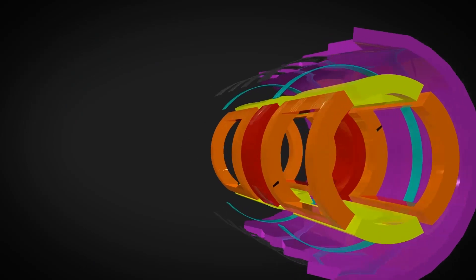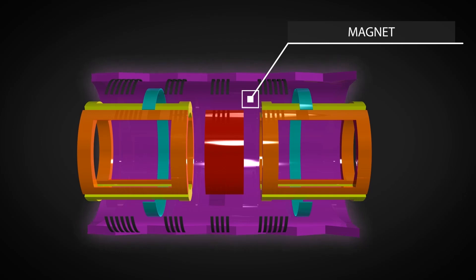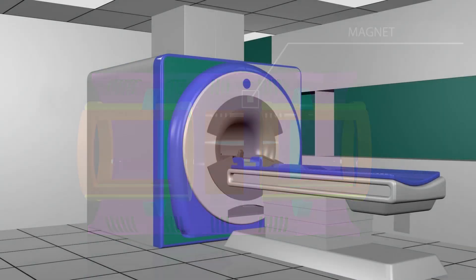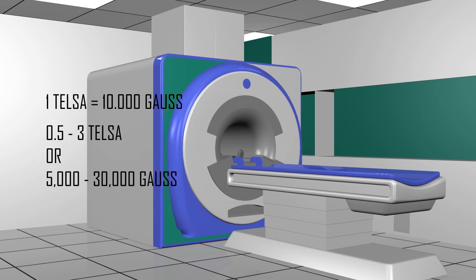The magnet is the most important part and the biggest component of the whole scanner. The magnet is rated using a unit known as Tesla or Gauss. One Tesla equals 10,000 Gauss. The range of the magnetic field of an MRI is between 0.5 to 3 Tesla or 5,000 to 30,000 Gauss.